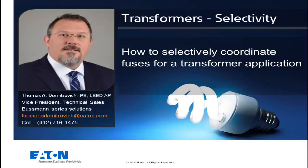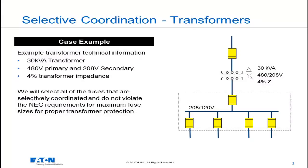Hello, my name is Thomas Dmitrovich. In this session, we're going to talk about how to selectively coordinate fuses for a transformer application. The example we'll use is a 30 kVA transformer with a 480 volt line-to-line primary voltage and a 208 volt line-to-line secondary voltage. We will select all of the fuses shown here to properly protect this transformer and achieve a selectively coordinated system.